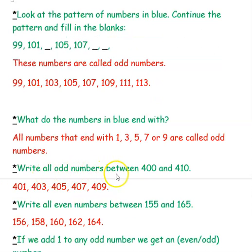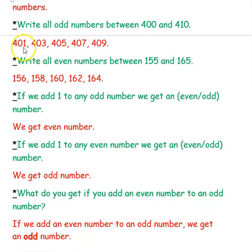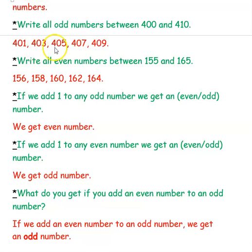Write all the odd numbers between 400 and 410. Odd numbers always end with 1, 3, 5, 7, and 9. So between 400 and 410 we have: 401, 403, 405, 407, and 409.